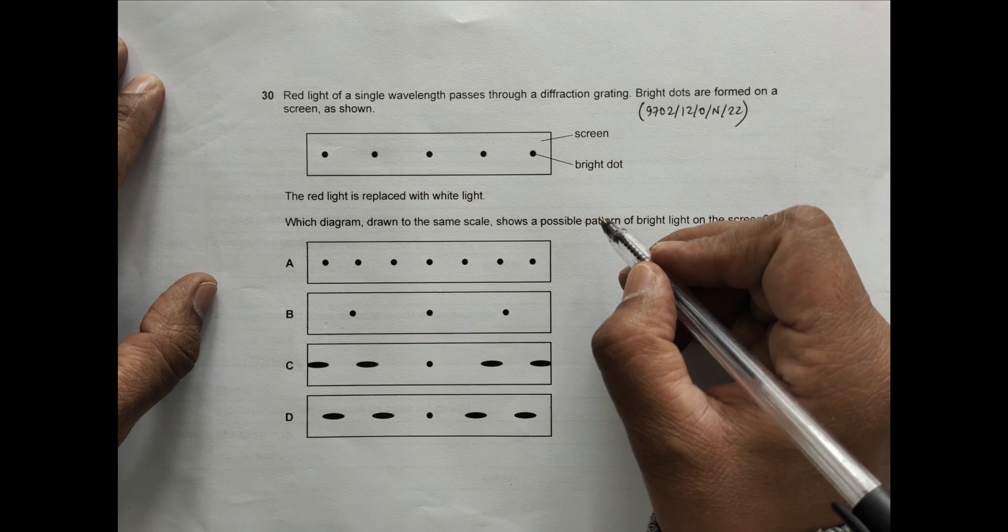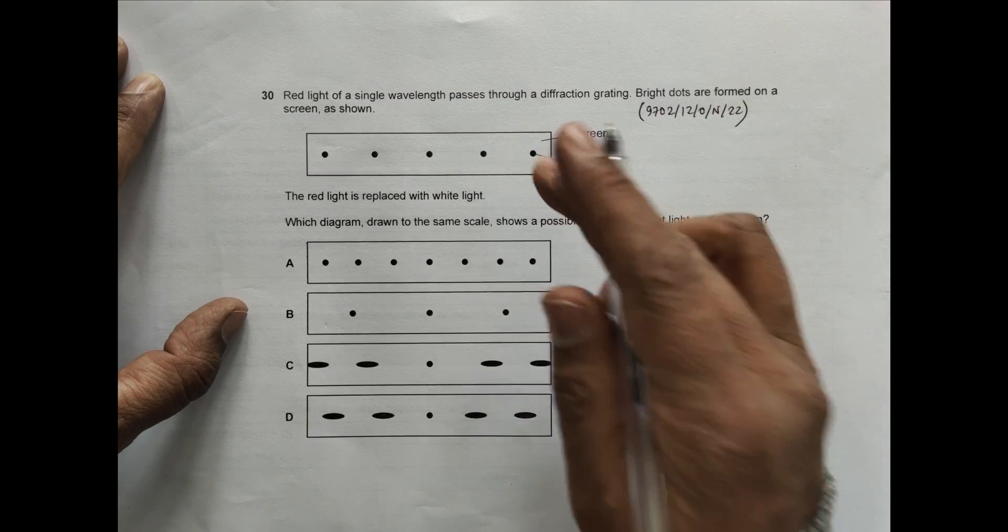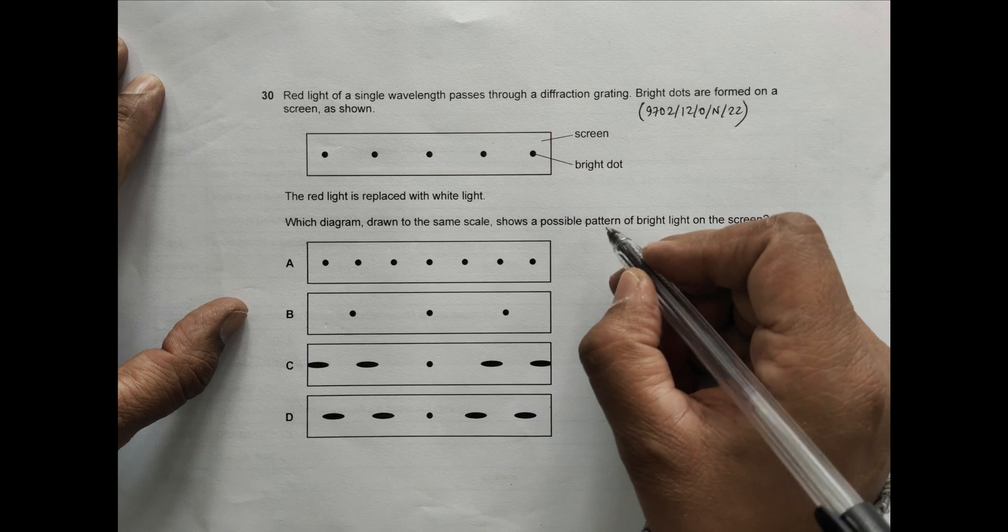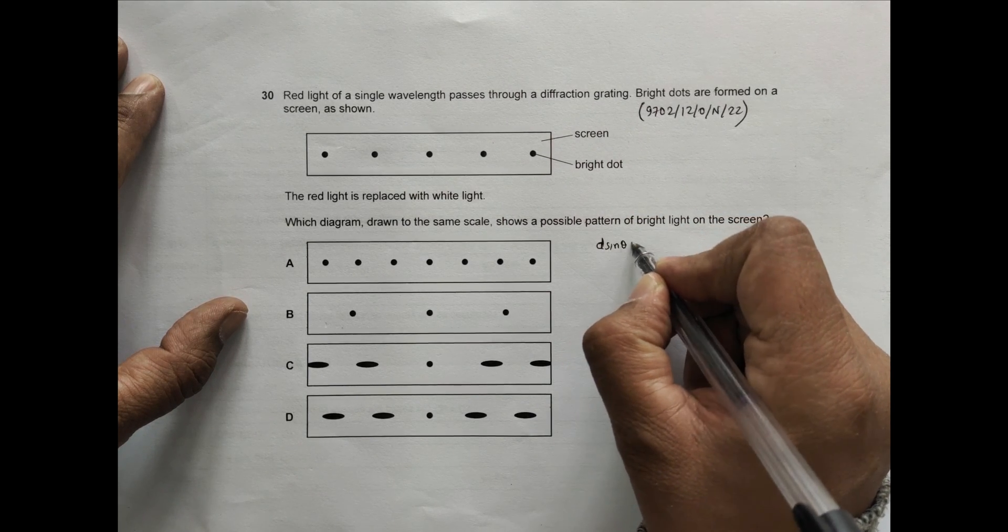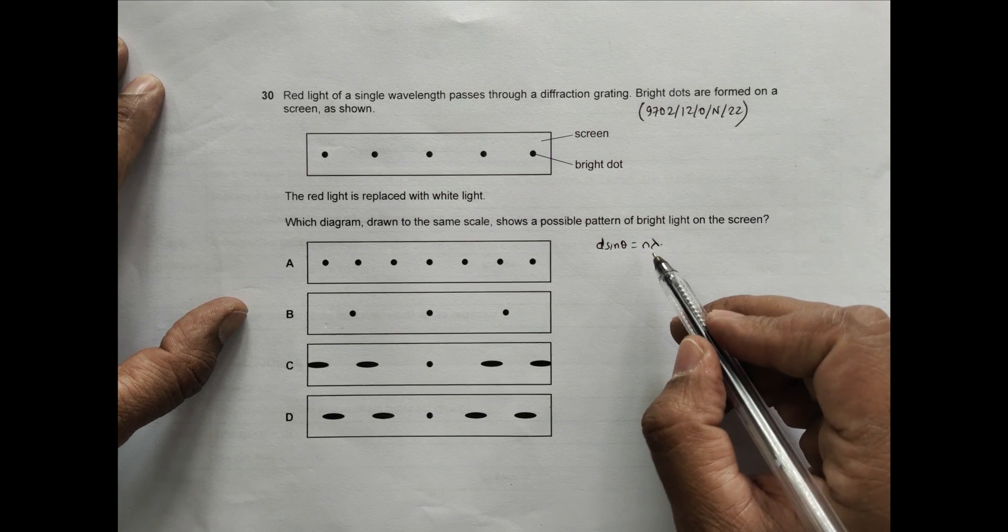For white light, let us go through the formula. We can see bright dots at those places where this condition is fulfilled: d sin θ = nλ, where n is the order here.